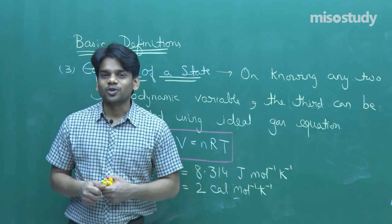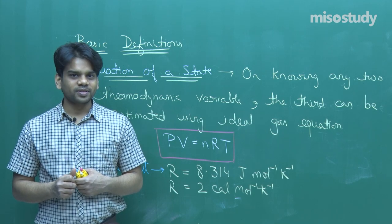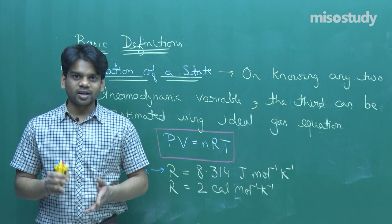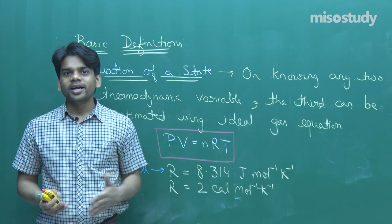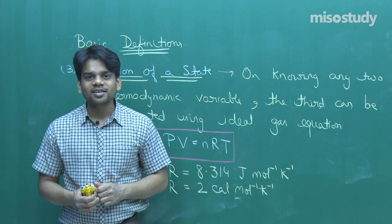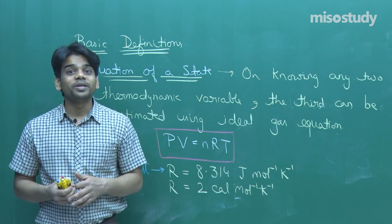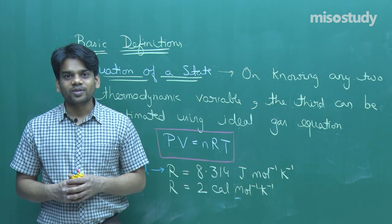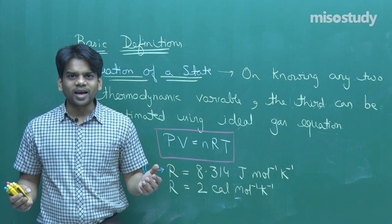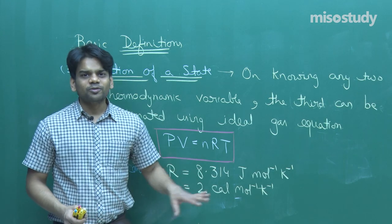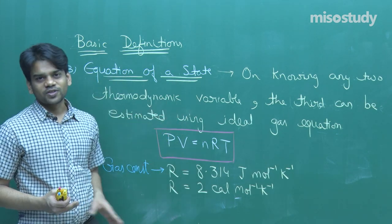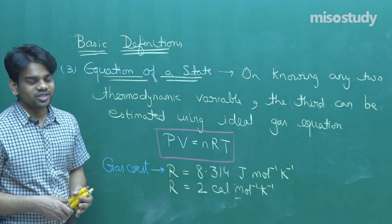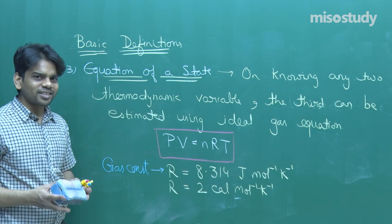To summarize the basic definitions: first, a thermodynamic system is any gas enclosed in a container, with a movable piston. Second, thermodynamic variables are pressure, volume, and temperature — these identify the state of the gas; entropy and internal energy can also be thermodynamic variables. Third, the equation of state — if you know any two thermodynamic variables, the third can be computed using the ideal gas equation.